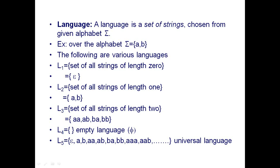These languages are accepted by finite automata (FA). Language definition: a set of strings chosen from a given alphabet. For example, given alphabet {a, b}, we can form different types of languages.